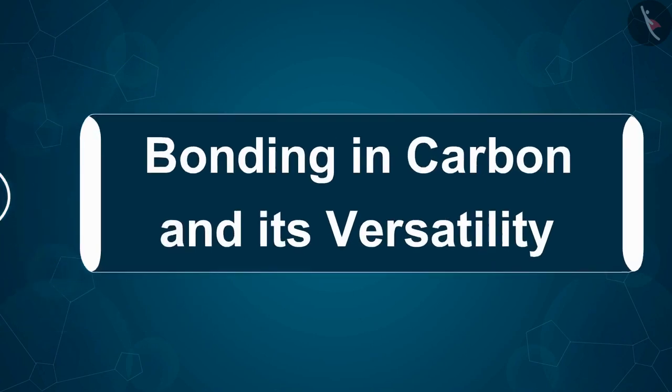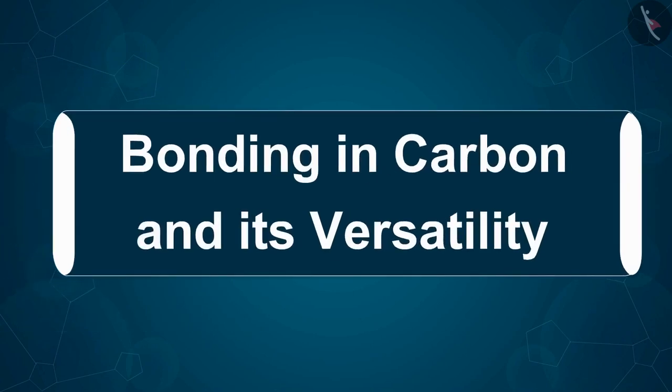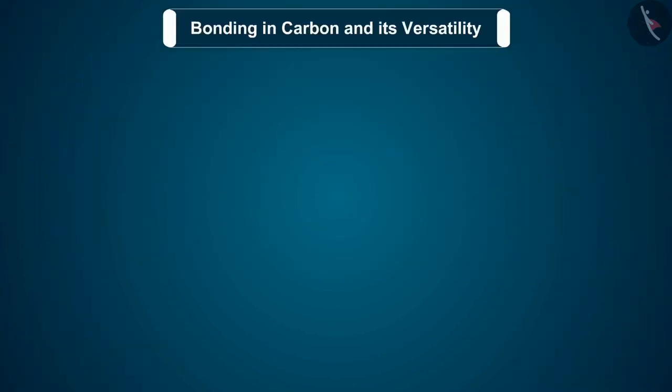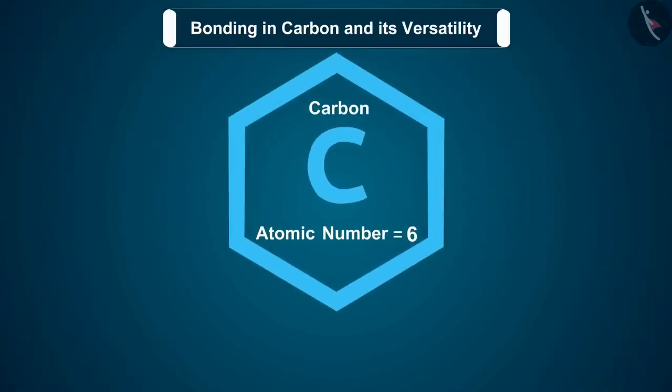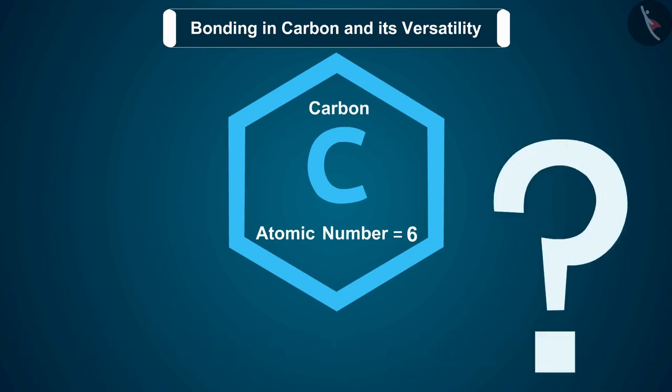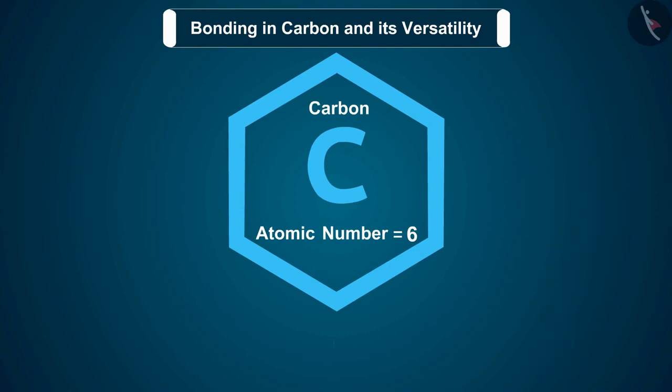Before we move ahead with our discussion, we should know that the atomic number of carbon is 6, which means that a neutral atom of carbon contains 6 electrons. How will the distribution of electrons in different orbitals of carbon occur? Why are we studying about the electronic configuration? We are studying its electronic configuration so that we can understand the type of bonding in carbon.